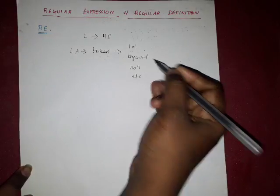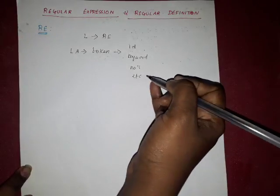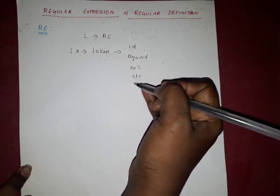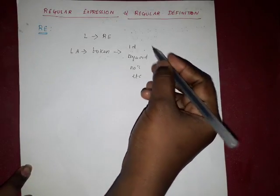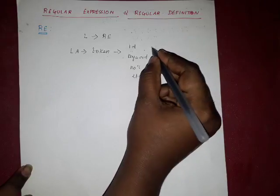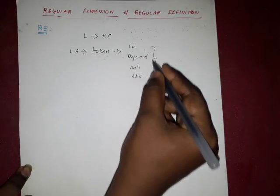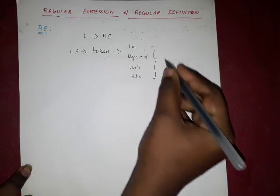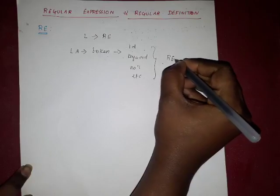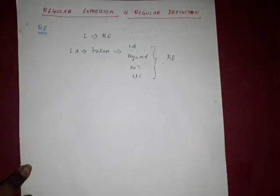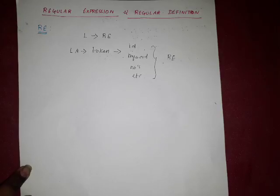What is an ID? What is a keyword? What is a number, and how can we identify those tokens? The answer is we can identify these tokens by using regular expressions. So we know about what regular expressions are and how regular expressions represent tokens.